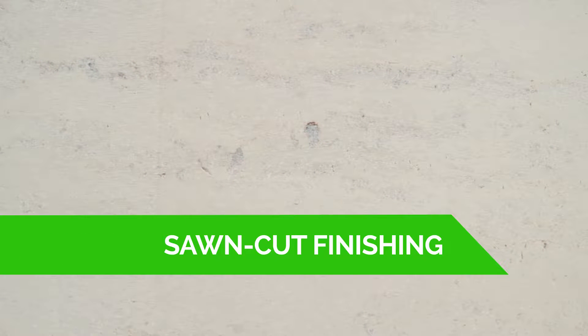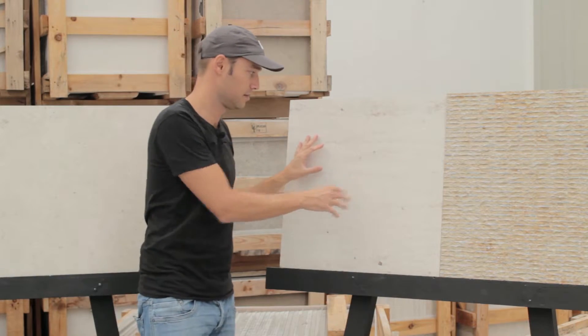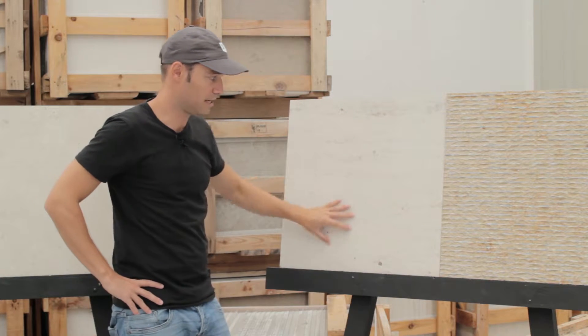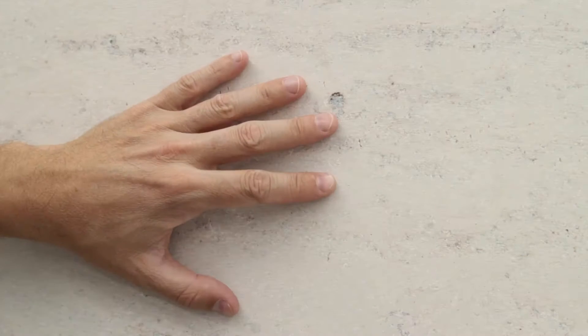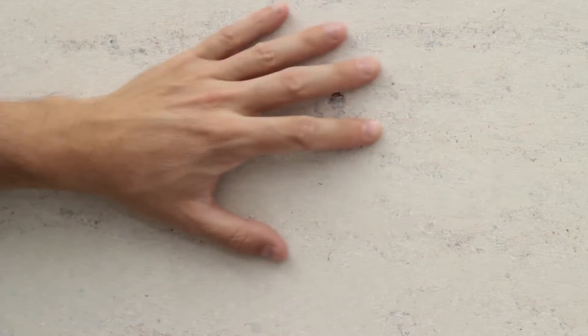This one is a sawn cut or rough. So essentially you saw the blocks and you don't do anything. So this is what you get. It's fairly white. This used to be a beige limestone. What you get is just a very white surface with hardly any contrast.